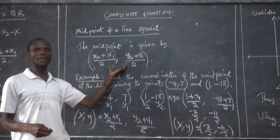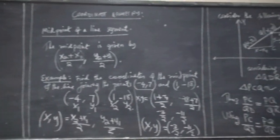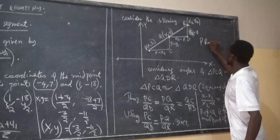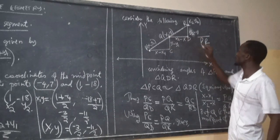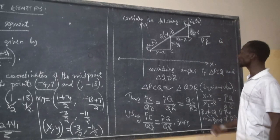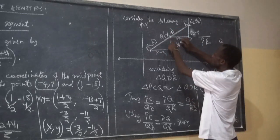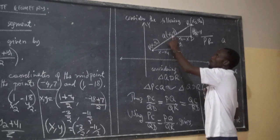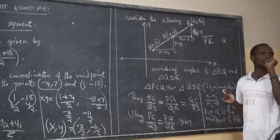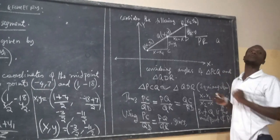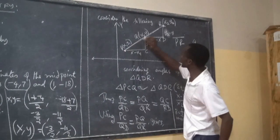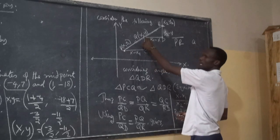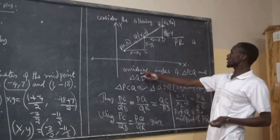Now let us see how this formula is derived. Consider a line segment PR, where Q is the midpoint of PR. The midpoint Q means the distance from P to Q is equal to the distance from Q to R — that is, PQ equals QR.